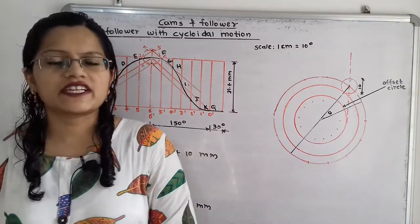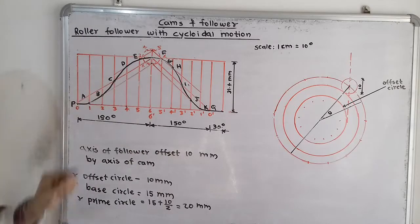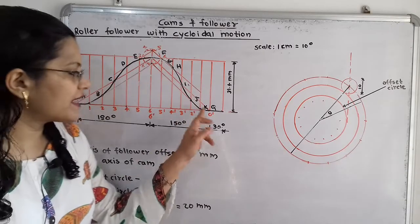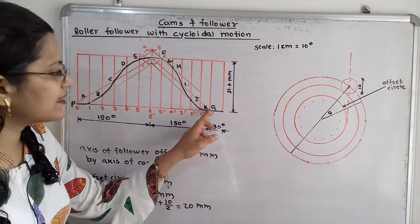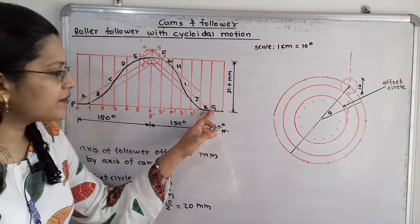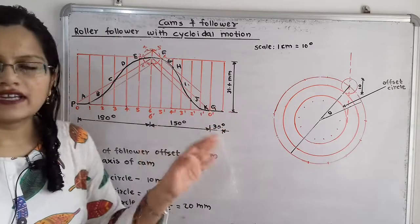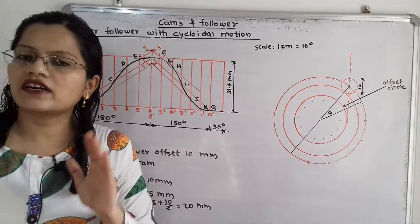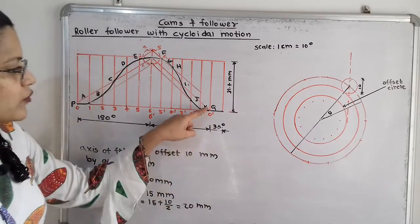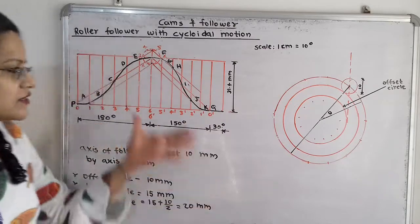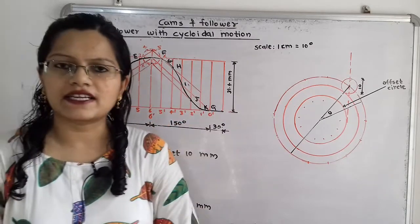The displacement diagram starts at point P (numbered 0). We join point P to the curve. The end point of the return stroke at 0 dash is labeled Q. During the dwell period there is no motion, so we extend this line horizontally for the dwell period. The displacement diagram is now complete.